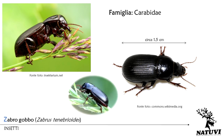Essi sono completamente neri e possiedono un protorace convesso dorsalmente, con capo sporgente portante due antenne filiformi. Le elitre hanno margini paralleli tendenzialmente arrotondati all'estremità.